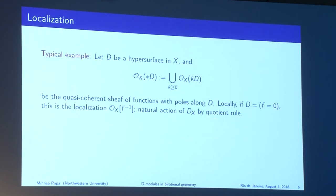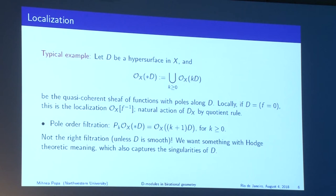The pole order filtration is the right filtration if and only if D is smooth; in general, we want something with more Hodge-theoretic meaning that sees more of the singularities of D. This is precisely the kind of filtration that comes from the theory of mixed Hodge modules. There is also the de Rham complex of a filtered D-module: because we have an integrable connection-like operation, we can iterate it to form a complex, and filter it using the filtration on M compatible with the filtration on differential operators.